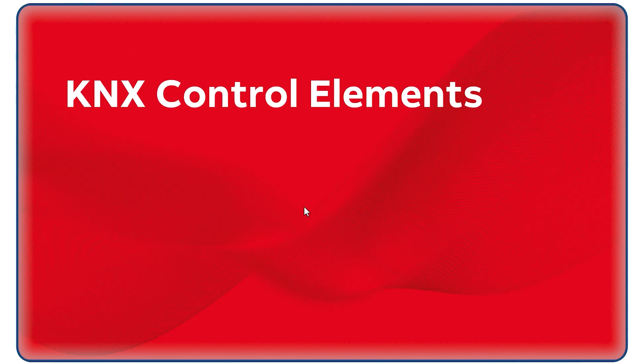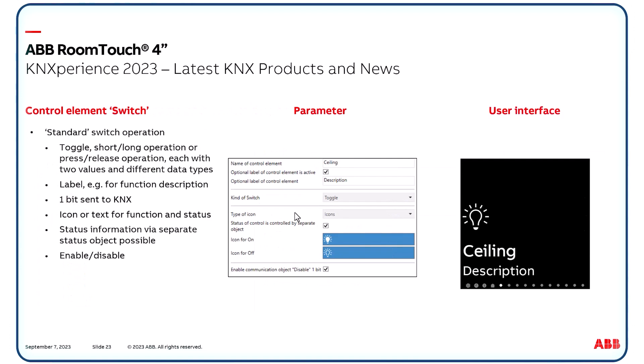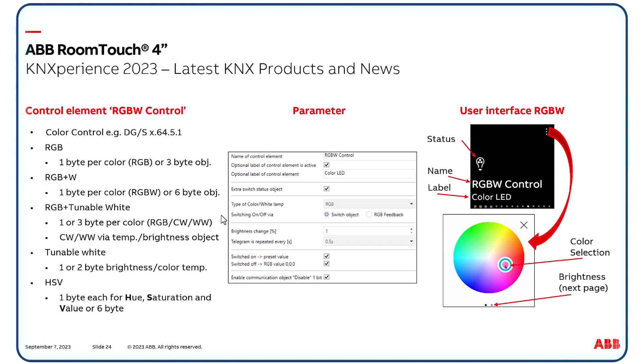Now we see some details of the control elements. In total, 13 different ones exist, to be selected in the DCA and placed on the page. The switch control element is made to send 1-bit telegrams, with typical options to adjust the kind of switch like toggle and more. Icons or text can be chosen. Status information via separate status objects is parametrizable. An enable/disable object is available to activate or deactivate the button temporarily — also possible for other control elements. The RGB white control element allows complete operation of colored lighting, typically by means of the KNX DALI gateway. All needed adjustments like type of color control — for instance RGB or tunable white — and the used data point type including the 6 white objects are offered in the parameters. The user can select in the color circle the color directly, which is impossible with a normal KNX push button.